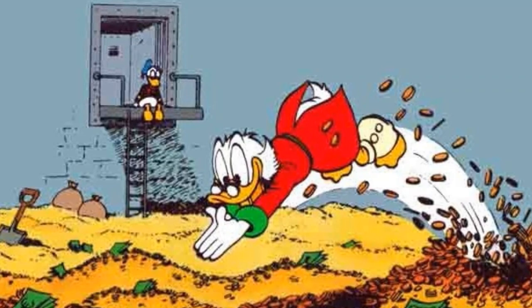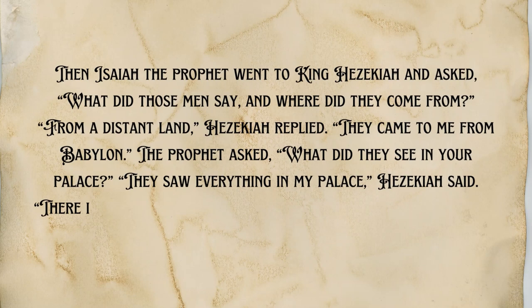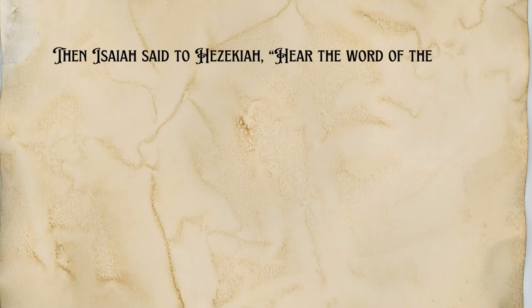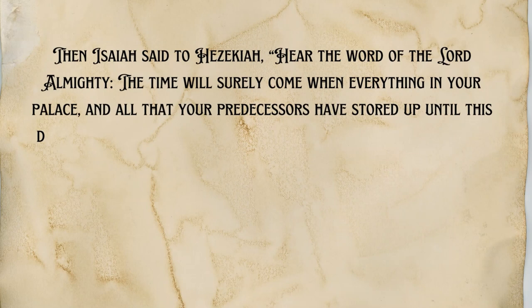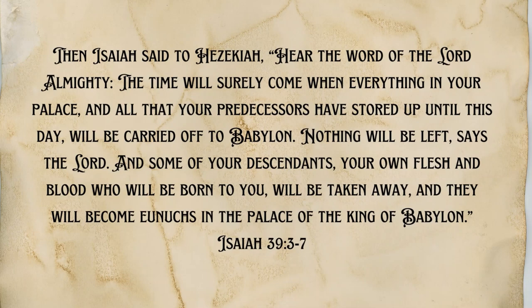His bad decision brings upon a prophecy of judgment. In verses 3-7 we read: Then Isaiah the prophet went to King Hezekiah and asked, 'What are those men saying? Where do they come from?' 'From a distant land,' Hezekiah replied, 'they came to me from Babylon.' The prophet asked, 'What do they see in your palace?' 'They saw everything in my palace,' Hezekiah said. 'There is nothing among my treasures that I did not show them.' Then Isaiah said to Hezekiah, 'Hear the word of the Lord Almighty. The time will surely come when everything in your palace and all that your predecessors have stored up until this day will be carried off to Babylon. Nothing will be left, says the Lord. And some of your descendants, your own flesh and blood, will be taken away and they will become eunuchs in the palace of the king of Babylon.' King Hezekiah is selfishly relieved by this prophecy, thinking to himself that at least he will live in peace and safety in his own times.